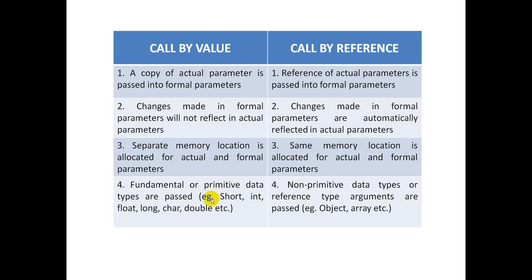In case of Java, जब हम function में parameter pass कर रहे हैं, if the parameters are of primitive data type — मतलब integer, short, float, long, character, double — यह सब data types अगर हम pass करते हैं, then it will be call by value by default. Whereas अगर Java में method में जो parameter pass कर रहे हैं, वो parameter अगर object है या array है, then they will be passed by reference.